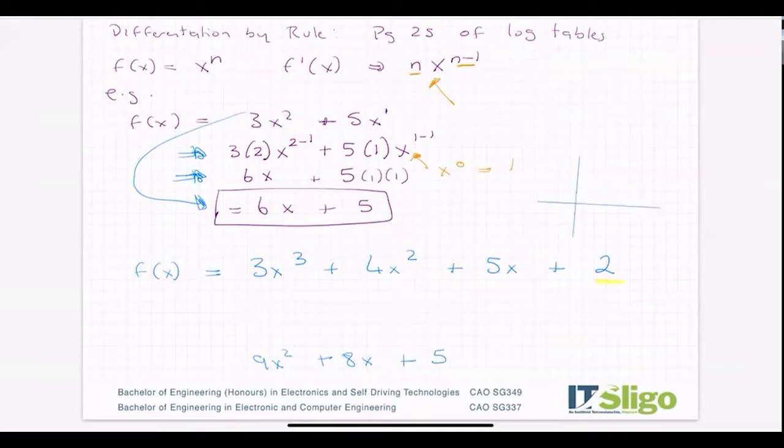This 3 stays here, take down this 3, reduce the power by one. That's my n and that's my n-1 from the rule. Plus 4 times take down the power, reduce the power by one, plus zero.